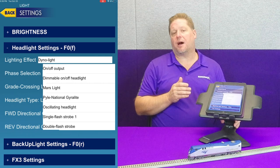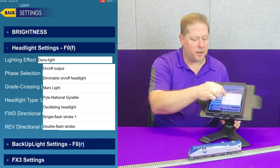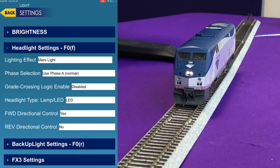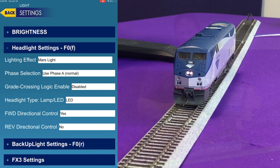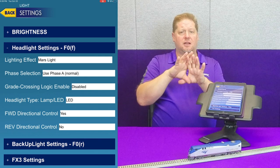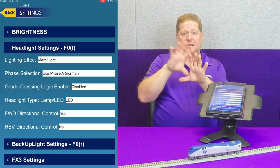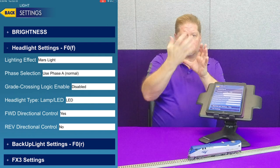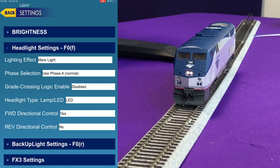The third option is the Mars light. When you click it, you'll instantly notice the headlight is now flashing a Mars light pattern — bright, gradually goes dim, then turns on not quite as bright, then dims and goes back solid. This simulates the oscillating reflector behind the light creating a figure-eight pattern, with the flash occurring when that reflector shines the light into your eyes.